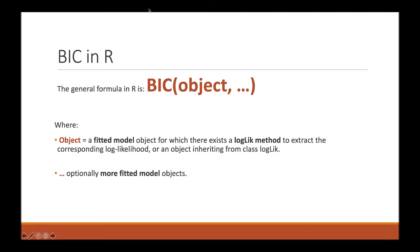To do BIC in R, you can use this general formula where, again, 'object' is the fitted model object, and dot dot dot gives you the options to add more fitted model objects.